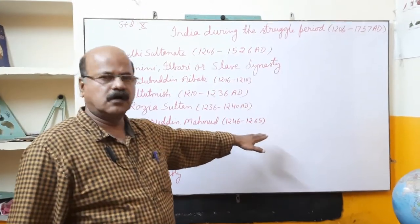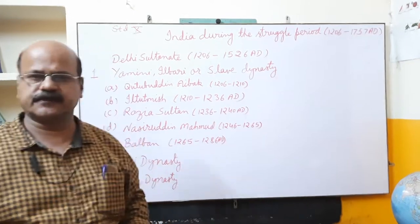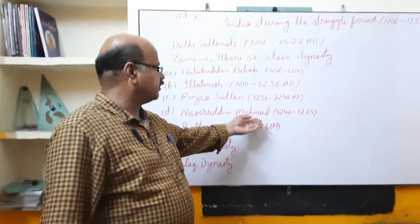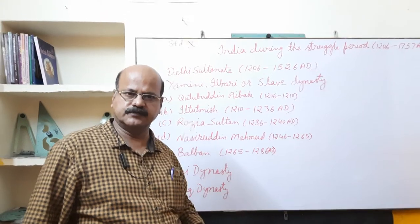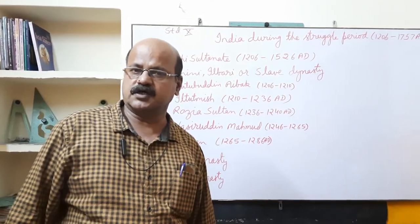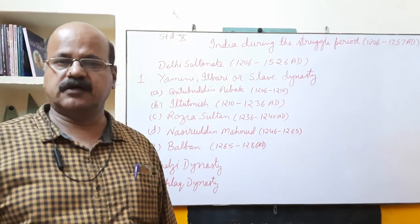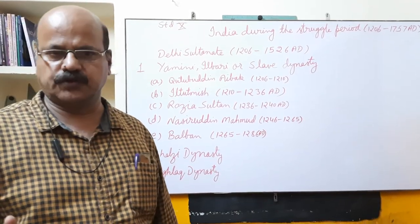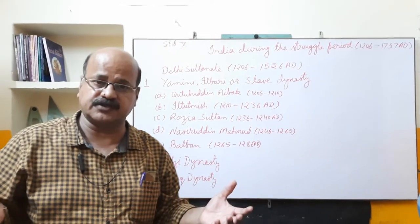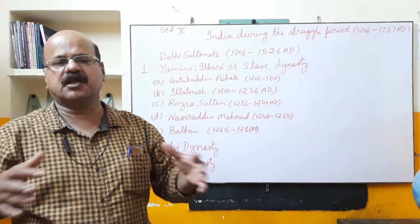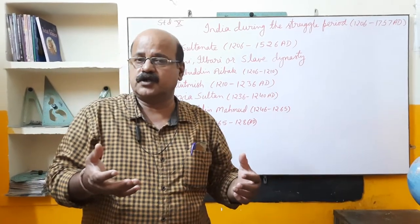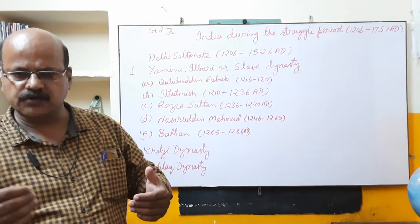Nasiruddin Mahmud occupied the throne in 1246 AD, after the death of Razia in 1240 AD, and he ruled for nearly 20 years. Behind his effective rule there was the support of Ghiyasuddin Balban. When Nasiruddin Mahmud died in 1265 AD, Balban became the Sultan of the Delhi Sultanate. Ghiyasuddin Balban was a slave of Iltutmish. He was very intelligent, very powerful, and a good warrior. Most importantly, he possessed great experience and knew very well the Chahalgani system — the group, or band of 40 Turkish nobles — and how they conspired against the state.